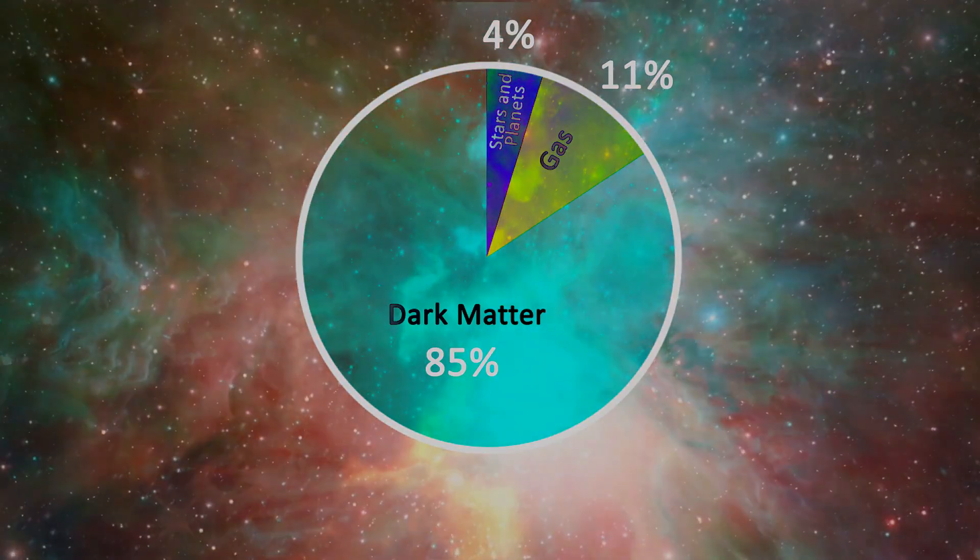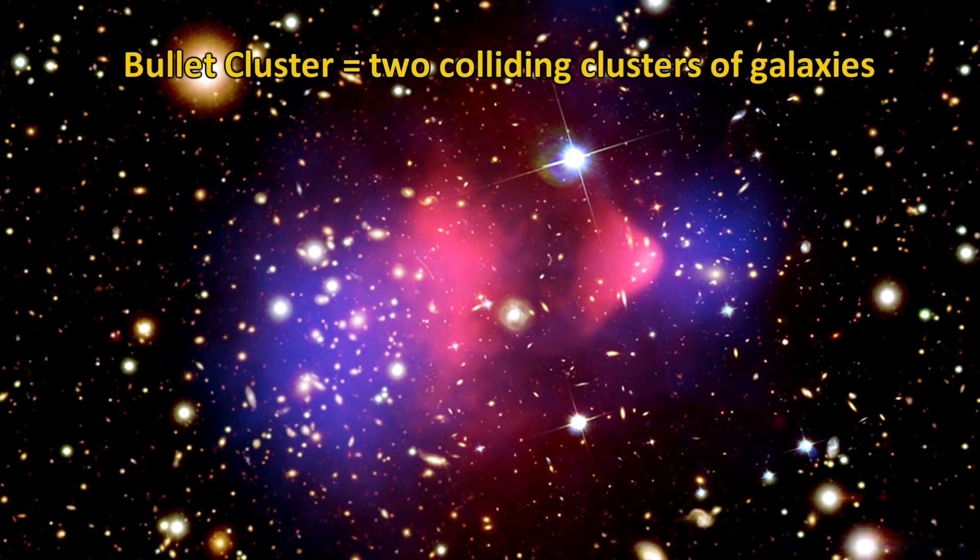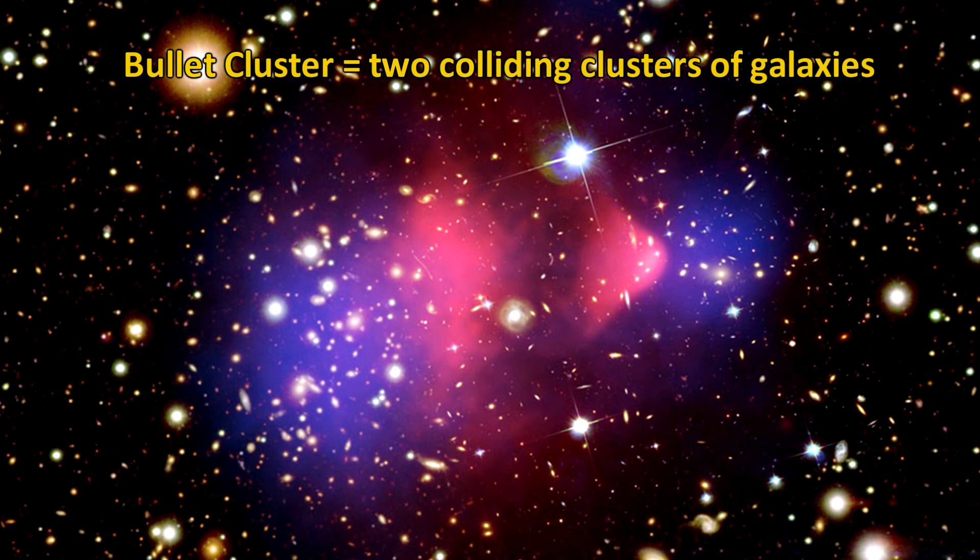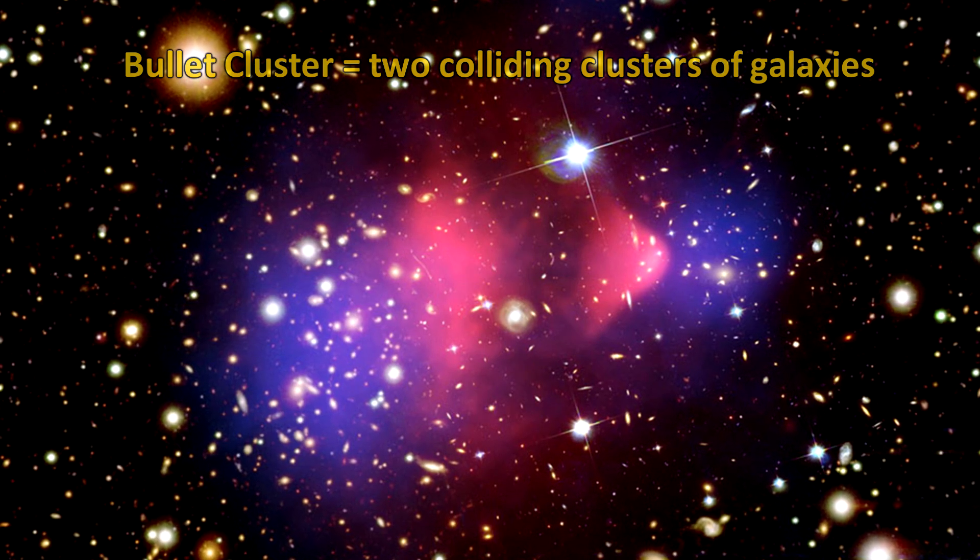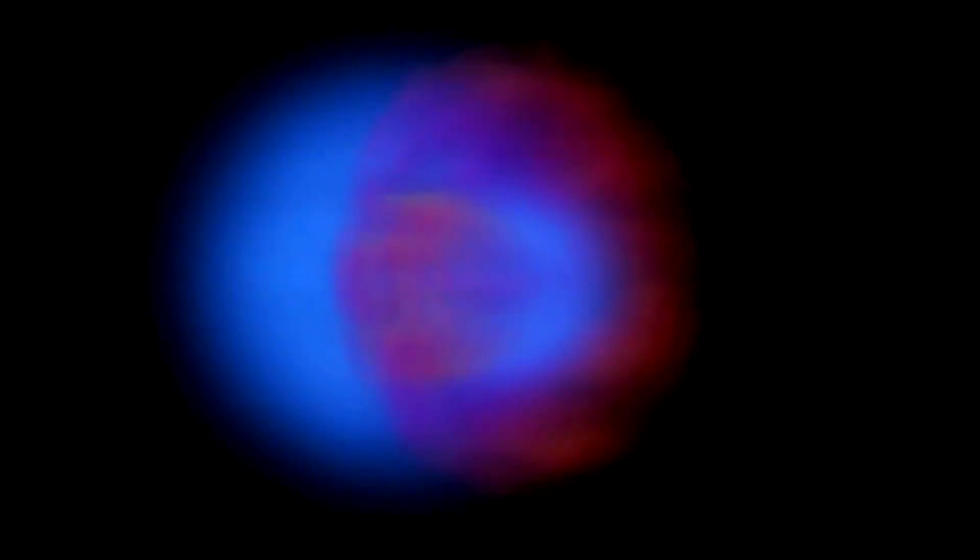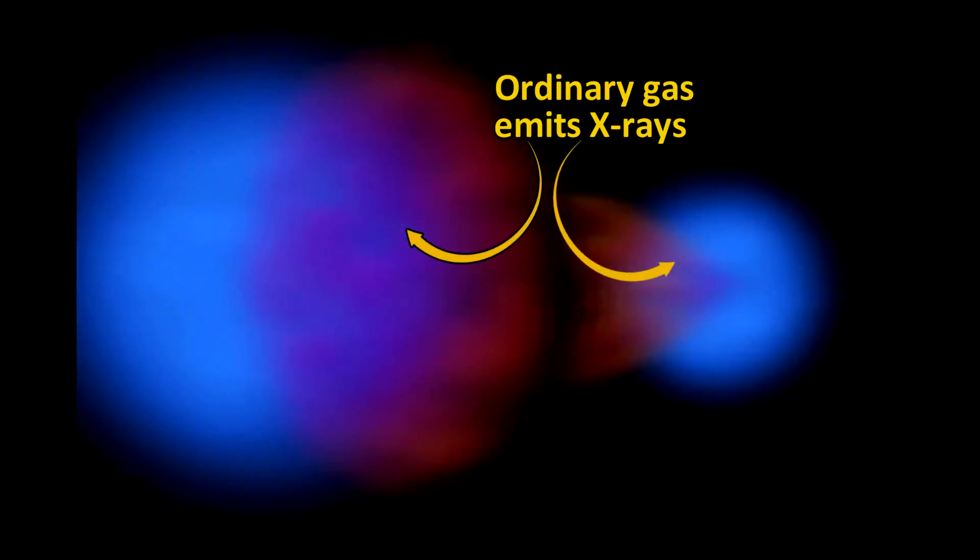The bullet cluster is, I think, the most interesting evidence showing how the behavior of dark matter is not like ordinary matter. This is an enhanced photograph of two clusters of galaxies passing through each other. In a computer simulation of this, what you can clearly see is that the gases of two galaxies are interacting with each other and heating up to emit X-rays, which are visible as bright pink areas.